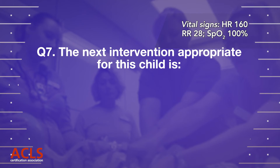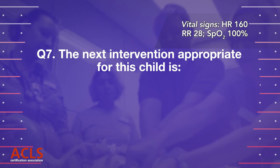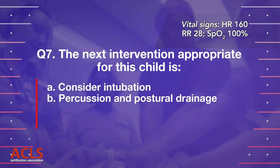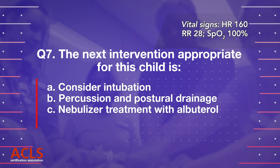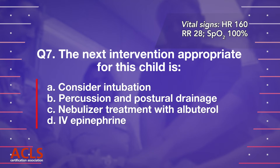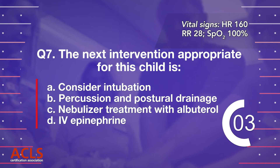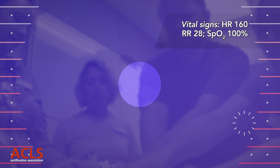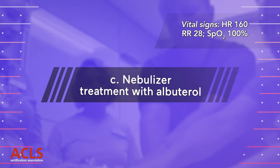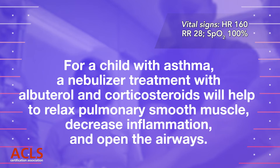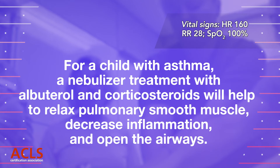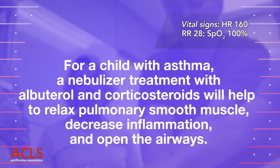Question 7: The next intervention appropriate for this child is: A) Consider intubation; B) Percussion and postural drainage; C) Nebulizer treatment with albuterol; D) IV epinephrine. Correct answer C — Nebulizer treatment with albuterol. For a child with asthma, a nebulizer treatment with albuterol and corticosteroids will help relax pulmonary smooth muscle, decrease inflammation, and open the airways.